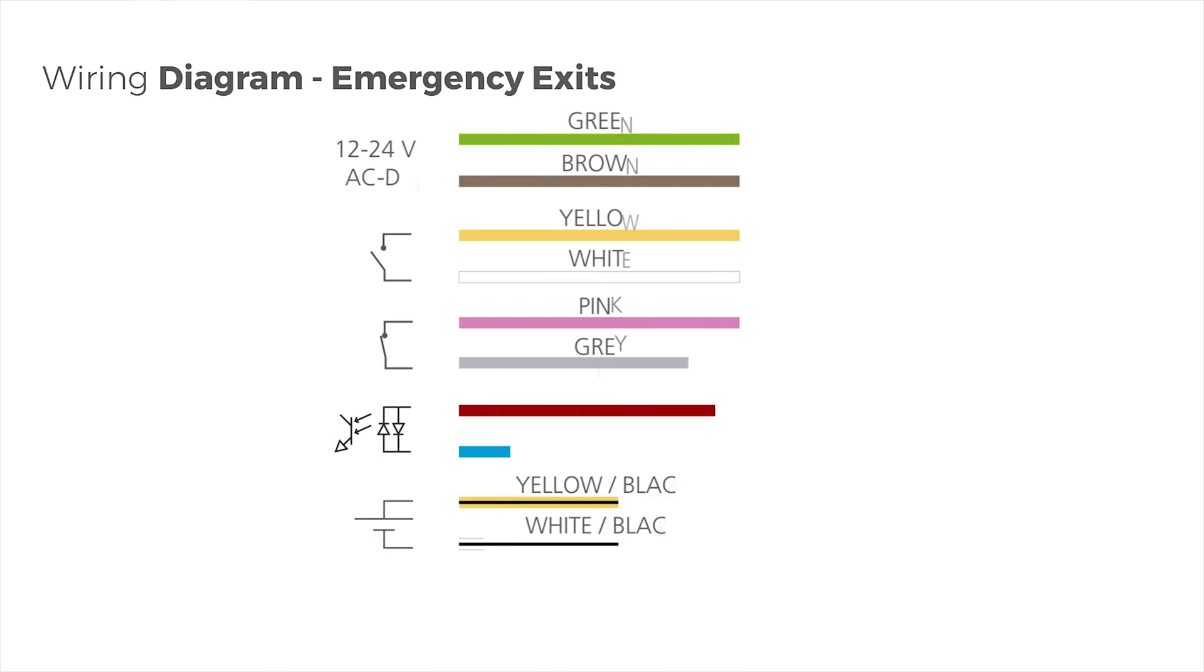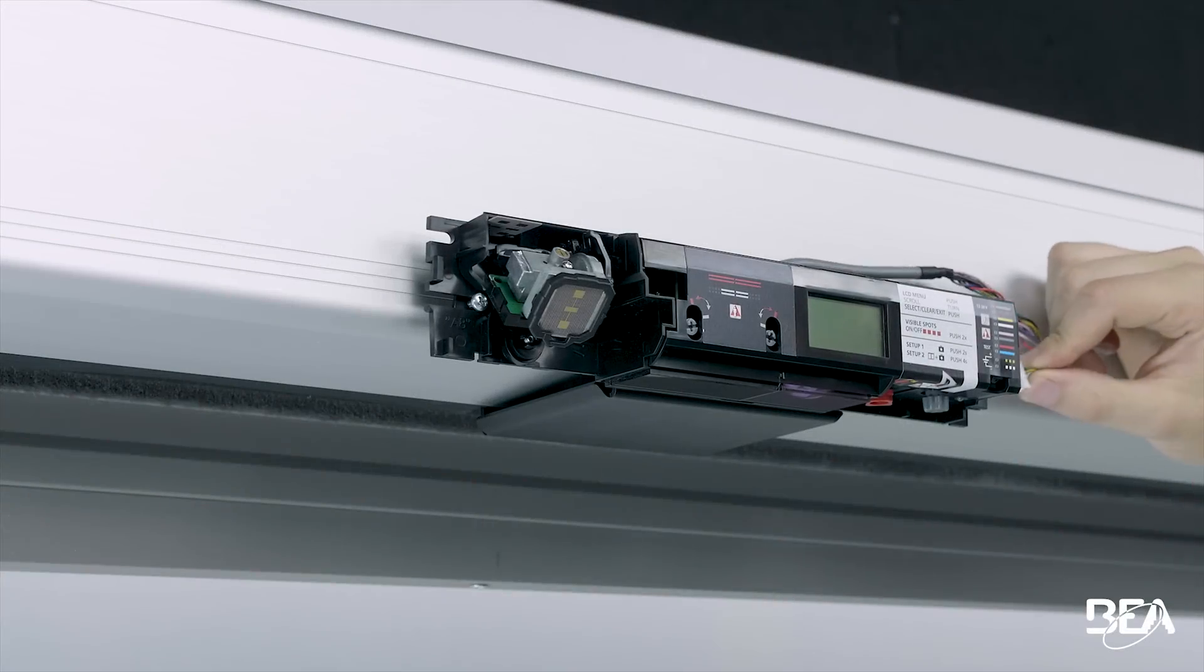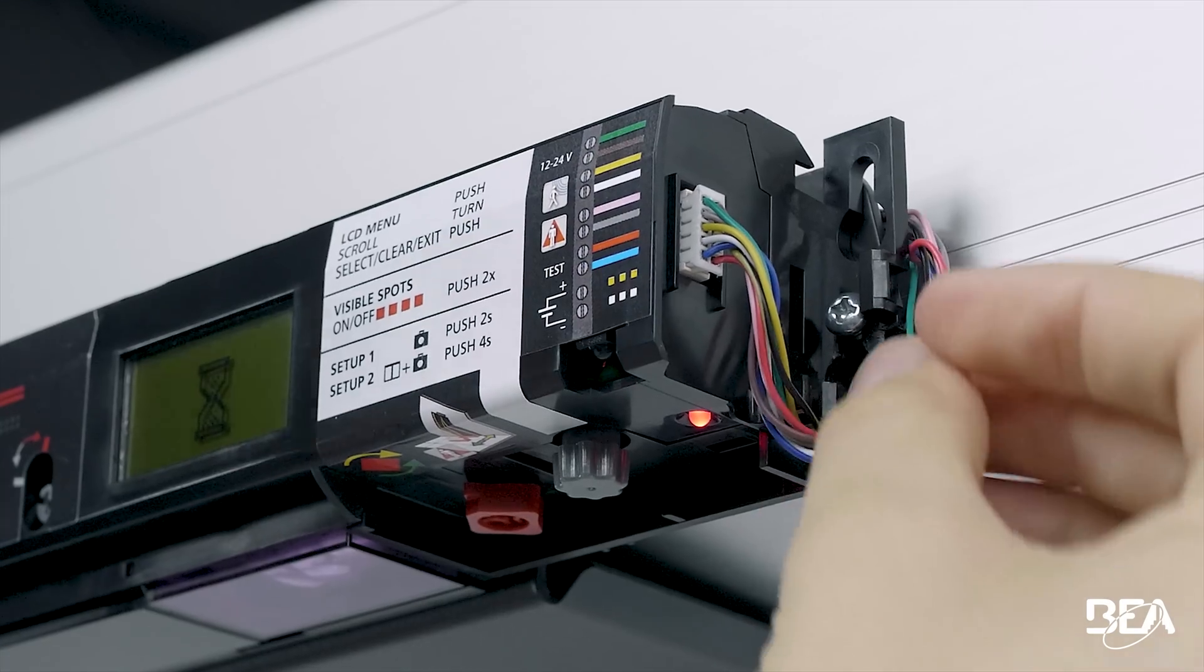When installed on emergency exits, connect the yellow and white or yellow-black and white-black wires to the opening input according to your door controller. Plug the white connector into the white plug. The LCD screen is active now.